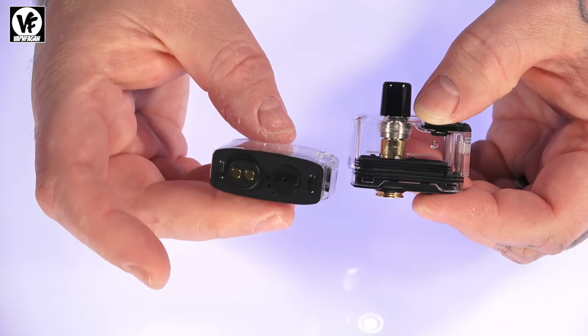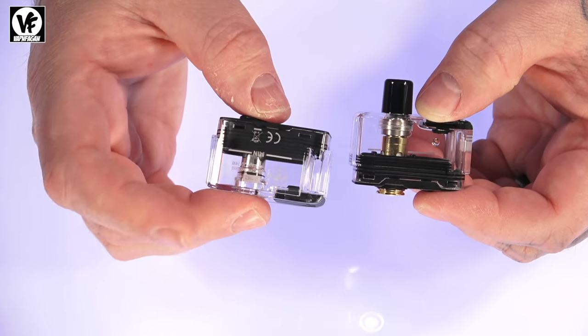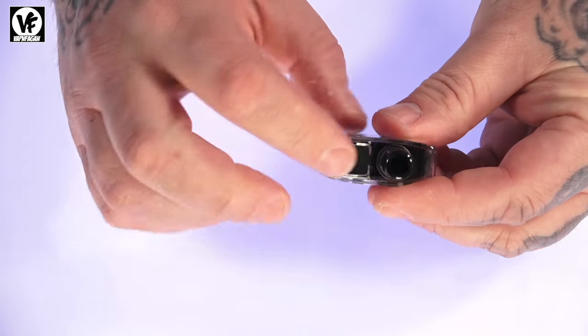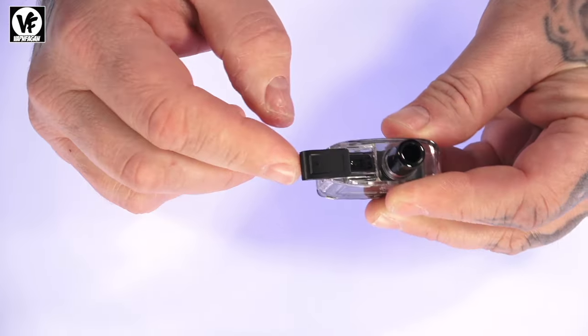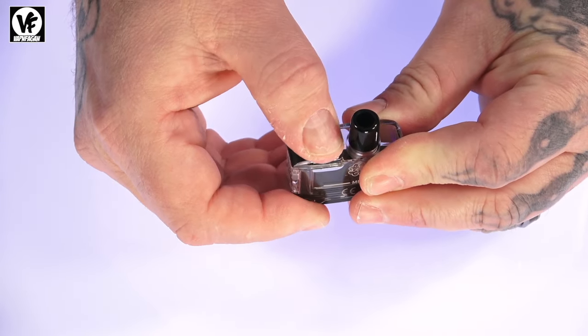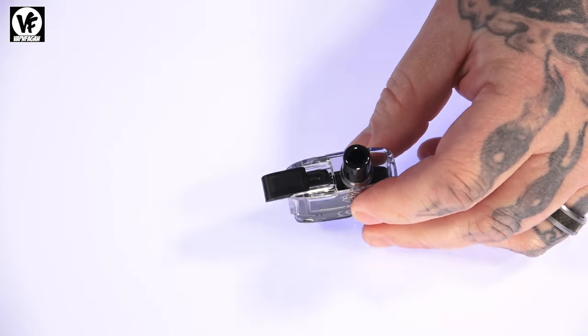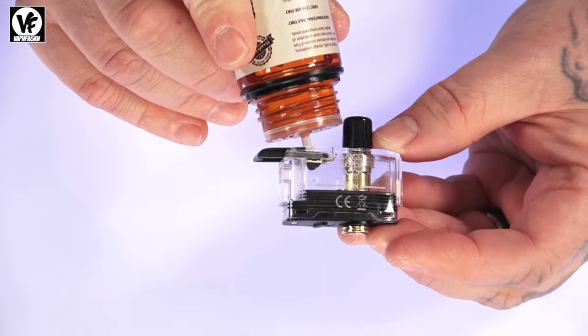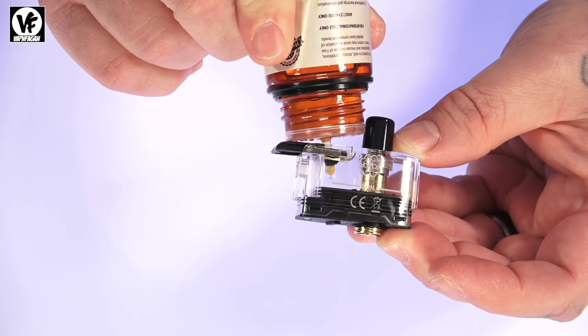The fill method is a top fill, pretty easy. All you do is slide this door open - it doesn't have any kind of locking mechanism, it just simply slides open. Then you're going to grab your bottle of liquid and the drip tip kind of gets in the way, kind of doesn't. The bottle still fits down inside so I haven't had an issue with that.